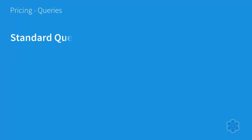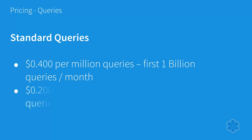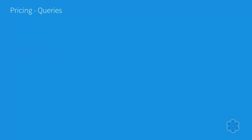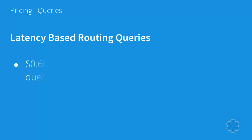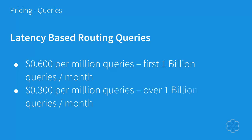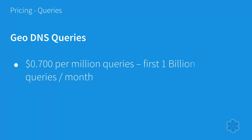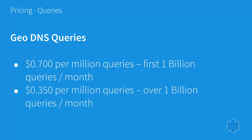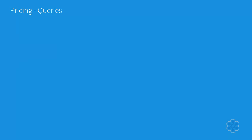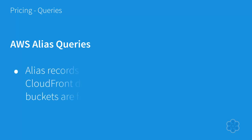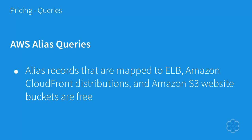Standard queries are priced at $0.40 per million queries for the first billion queries per month, and $0.20 per million queries over a billion queries per month. All query prices are prorated. Queries to alias records mapped to Elastic Load Balancers, Amazon CloudFront distributions, and Amazon S3 website buckets are free, and these will appear on the Route 53 usage report as intra-aws-dns-queries, intra-aws-lbr-queries, and intra-aws-geo-queries.